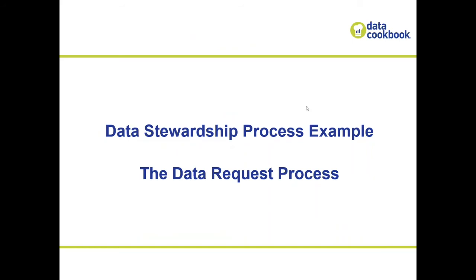How would we implement this in a process? We're going to talk about the data request process. This is one element — you might also have data quality issues or general data definitions that need to be done or other content changes. When we talk about data request process, we're really talking about someone who wants a new report, a new extract, a new integration, or a change to one of those existing things. Many organizations have some way to intake these requests — informally over the phone or email, or more formally through a ticketing system, web forms, word documents, or similar tools.